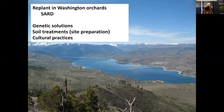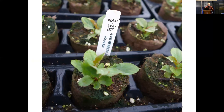My talk is basically going to cover genetic solutions that have occurred in the tree fruit industry, soil treatments including fumigation and other cultural practices such as irrigation management, and variety selection that improve performance of new orchards. I worked for 20 years after graduating from Washington State University, and as a production consultant I worked for 17 years with the Washington Tree Fruit Research Commission evaluating plant materials, rootstocks, and scion varieties for apples, pears, and cherries.